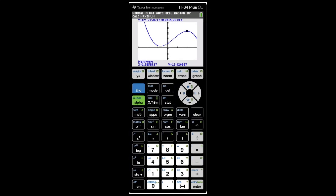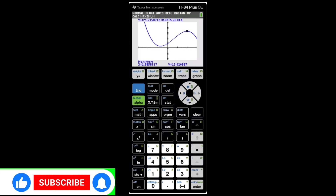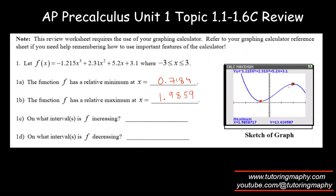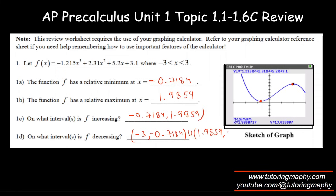The function is increasing from the minimum to the maximum, which is from x = negative 0.7184 to x = 1.9859. It is decreasing from negative 3 to the minimum value x = negative 0.7184, union with the interval from the maximum x = 1.9859 to 3.